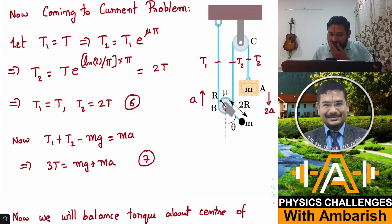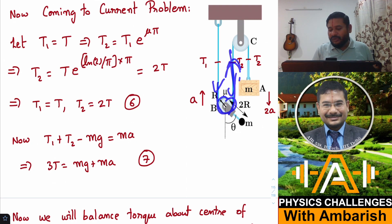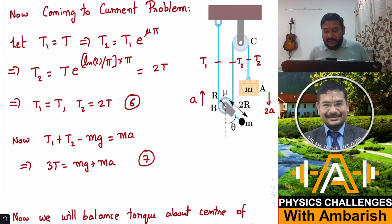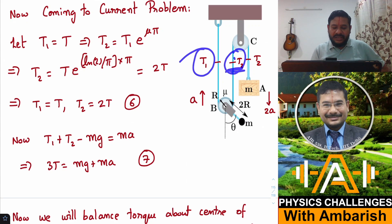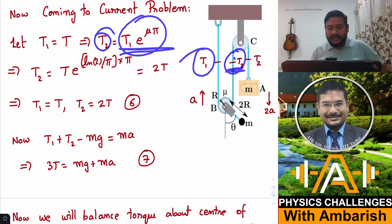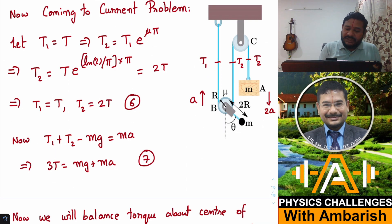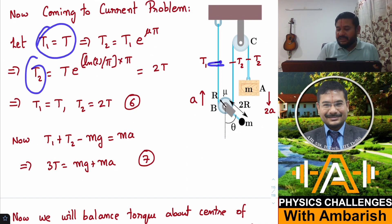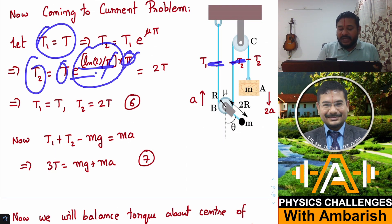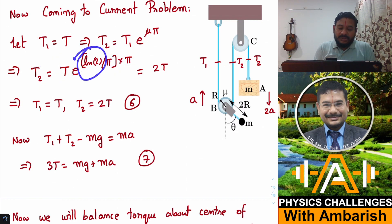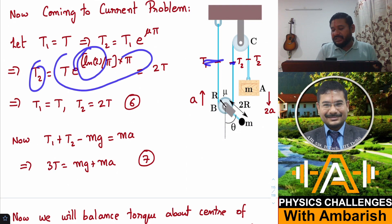Coming to the current problem: the rope is slipping over this rough disk, passing under the disk from left to right. The wrap angle is pi — the rope is wrapped through an angle pi around the disk. So if this tension is T1 and this is T2, we can write T2 = T1 * e^(mu*pi). The coefficient of friction is log 2 / pi, so T2 = T * e^(ln2/pi * pi) = T * e^(ln2) = 2T. So this side is T and this becomes 2T, and then also 2T at the frictionless pulley.